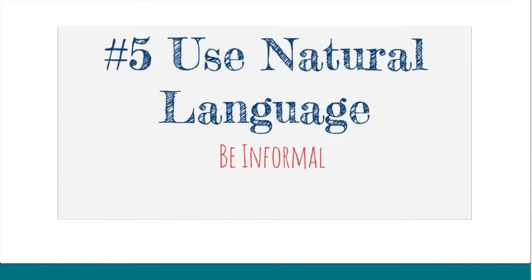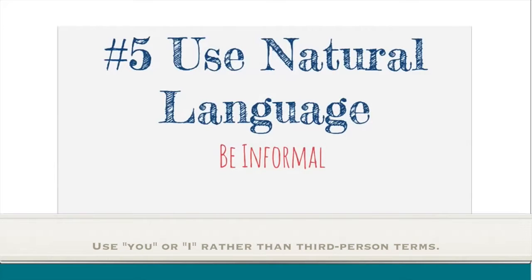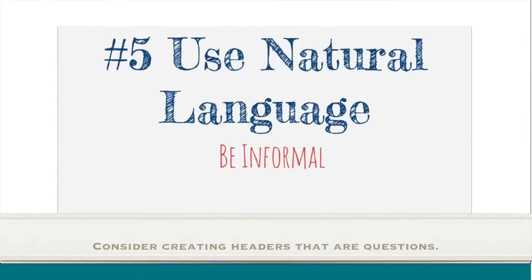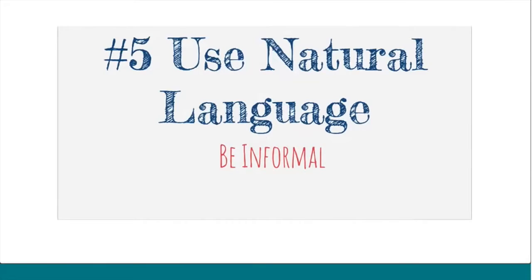Use natural language. Be informal — use 'you' or 'I' rather than third-person terms like 'the library' and 'the patron,' and use contractions. You don't have to say 'you are' — just say 'you're.' This allows the user to connect with your writing, which promotes germane cognitive load. Also consider creating headers that are questions, which connects to the user, and write in a helpful tone rather than a legal or bureaucratic tone.